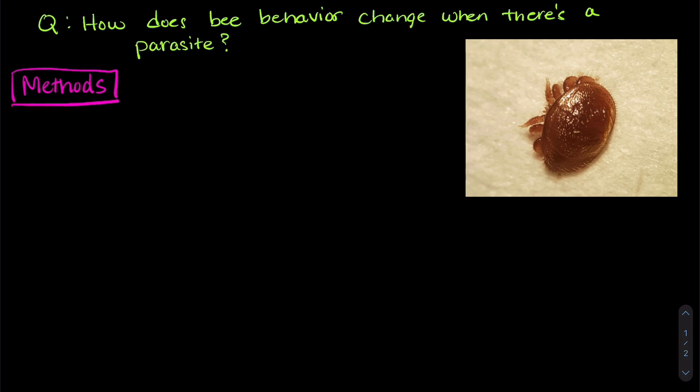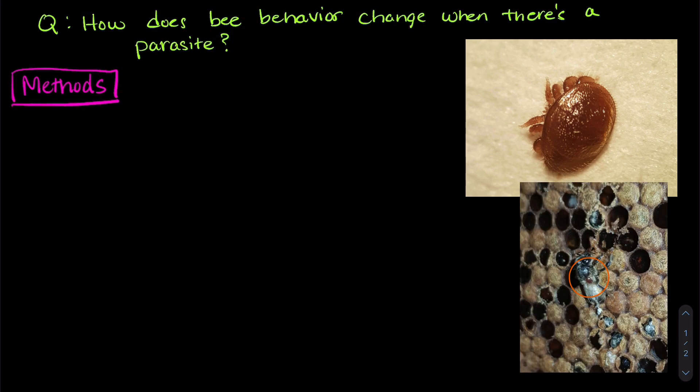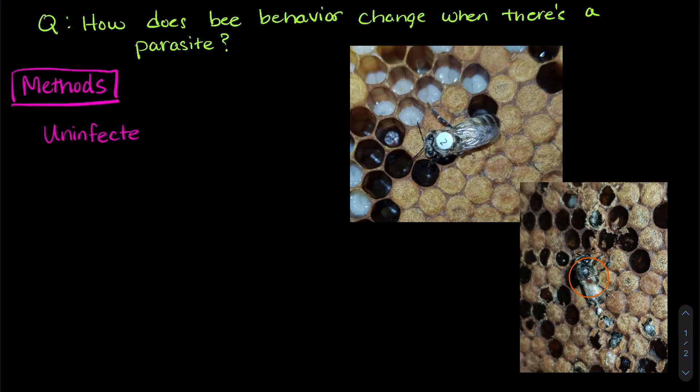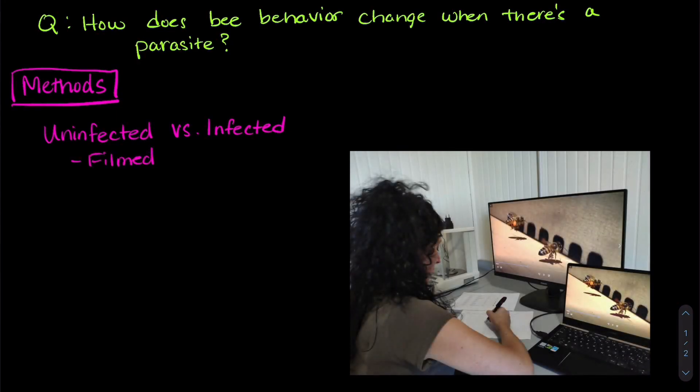The researchers did two different experiments. In both experiments, they had bees and or hives that were infected with parasitic mites and compared those with ones that were uninfected. The researchers filmed the bees and looked at space use and those individual behaviors I mentioned earlier.